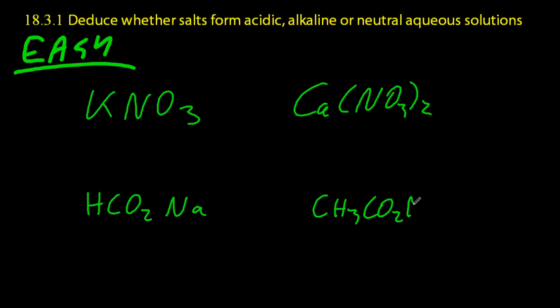So the first one is potassium nitrate. Potassium nitrate could be made from potassium hydroxide, a strong base. It's group 1 hydroxide. And the NO3, the nitrate, comes from nitric acid. So that's a strong base, strong acid combination.